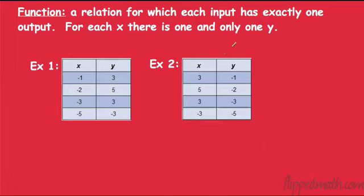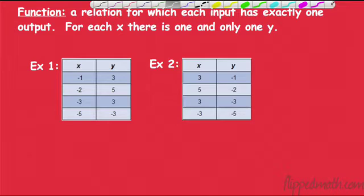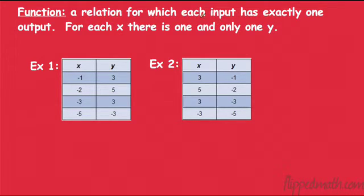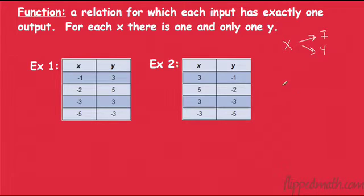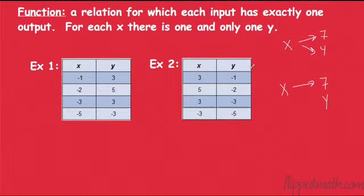And that leads us to what a function is. A function is a relation — a very special relation. A relation means that for every input there's an output. A function is a relation where each input has only one output. Sometimes if I put an x in I could get 7 and 4, but what a function says is: if I put an x in, I only get one output. Not two. For every x I put in, I'm only going to get one y out.